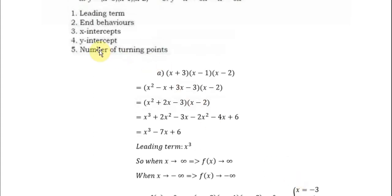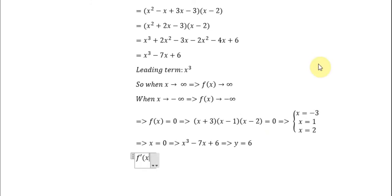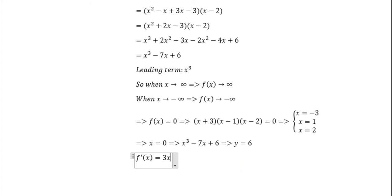The next one is the number of turning points. To find the number of turning points, we take the first derivative of x cubed minus 7x plus 6, which gives us 3x squared minus 7.